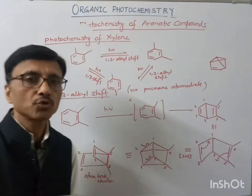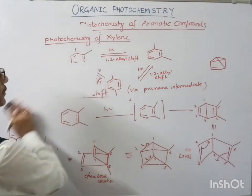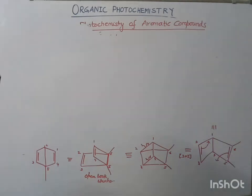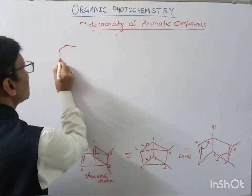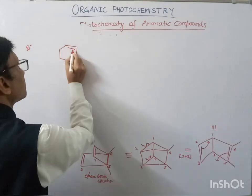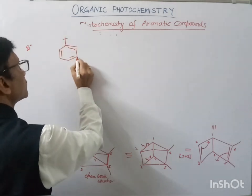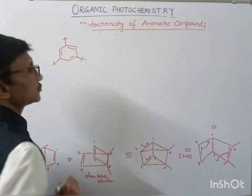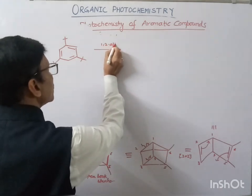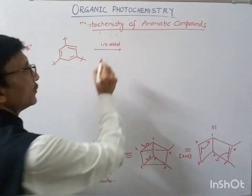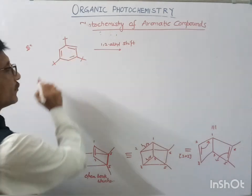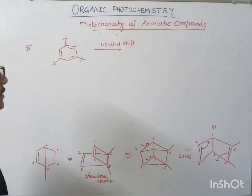So this is the 1,3-alkyl shift. Like this we can represent the photochemistry of xylene. Now one example: suppose on benzene if we have a tert-butyl group present. This is 1,3,5-tri-tert-butyl benzene, and we want to show the 1,2-alkyl shift here.